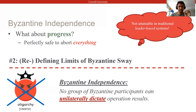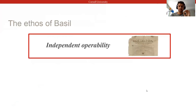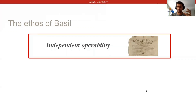In Basel instead, we strive to meet this property of Byzantine independence and sidestep concerns about ordering and fairness altogether. The key to efficiently realizing both correctness and progress is the core ethos we build Basel around, which we call independent operability.